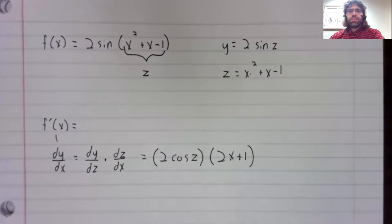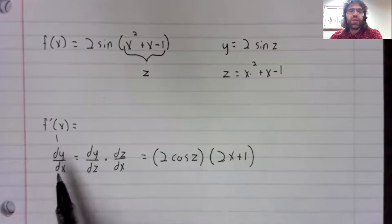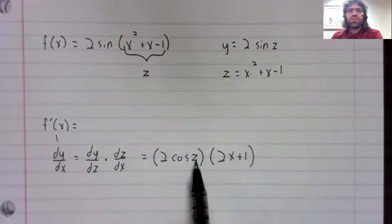And something's wrong here. We're taking the derivative of y with respect to x. Our variable was supposed to be x. And it is x here, we have 2x plus one. But what's this cosine of z?